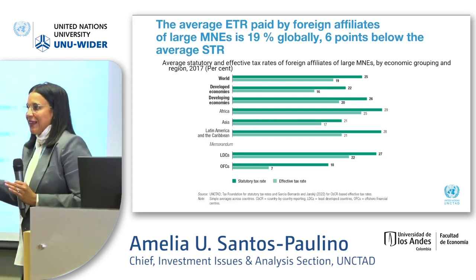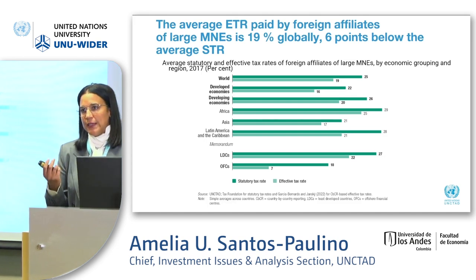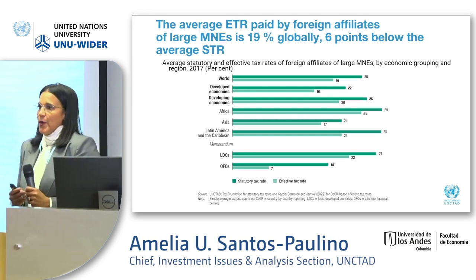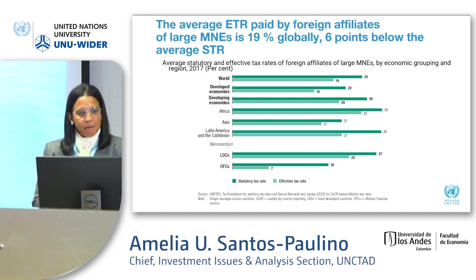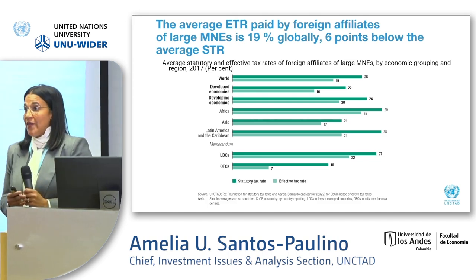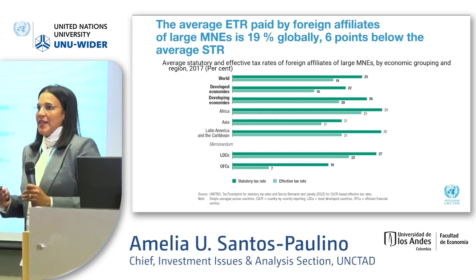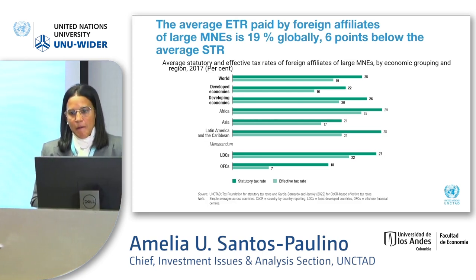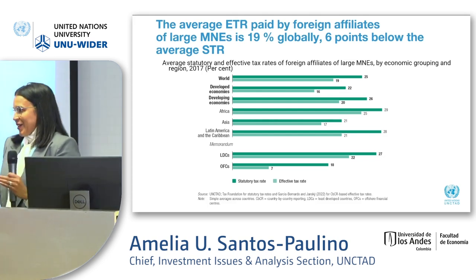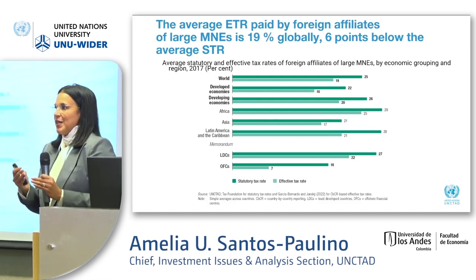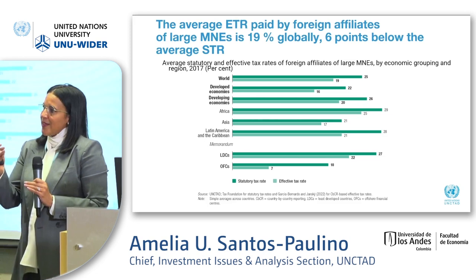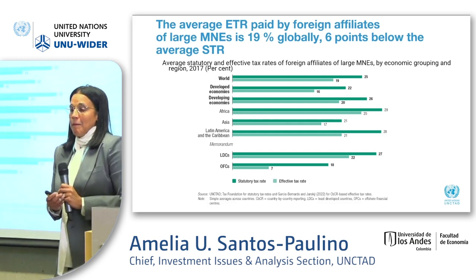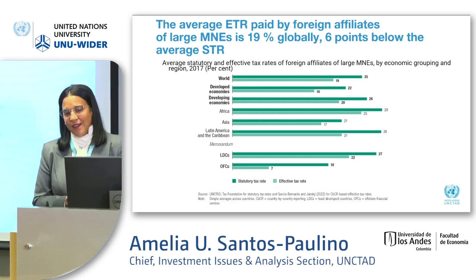In terms of the analysis, the unit we analyze is the effective tax rate paid by foreign affiliates of large MNEs. What we see is that on average the effective tax rate is 19%, six points below the average statutory tax rate. So MNEs effectively pay less tax than what the country's statutory tax rate implies, which brings in the discussion of profit shifting.